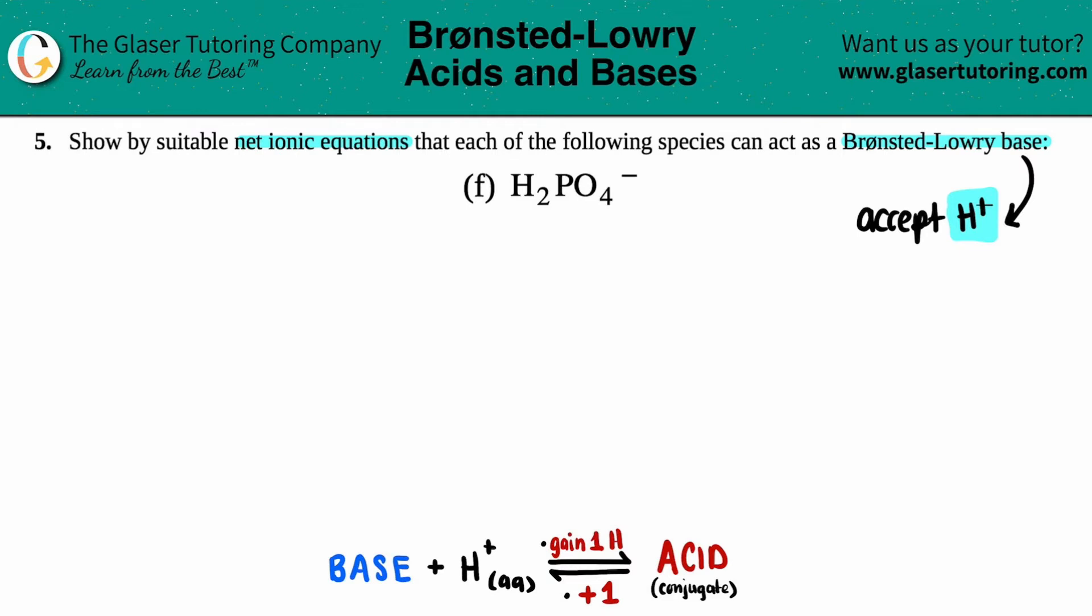All we have to do for this one is just write the net ionic equation. So how do I show that a base is going to accept the H-plus? Well, I have the base and the H-plus on the same side of the equation. That way they can come together by accepting.